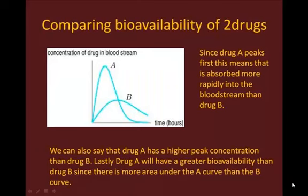So let's say we have two drugs, drug A and drug B. You can see that there are different types of curves, so this is the sort of information we can get. Since drug A peaks first, that means that this drug is absorbed more rapidly into the bloodstream. So if you have multiple drugs on a graph, whichever one reaches its peak first is absorbed the most rapidly.